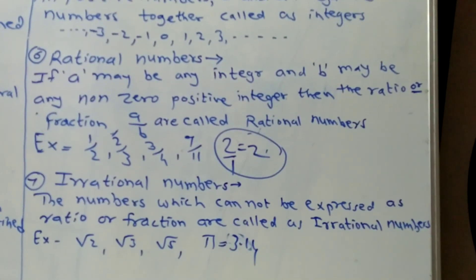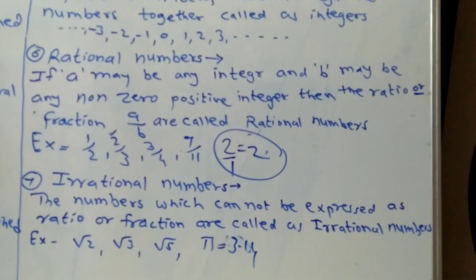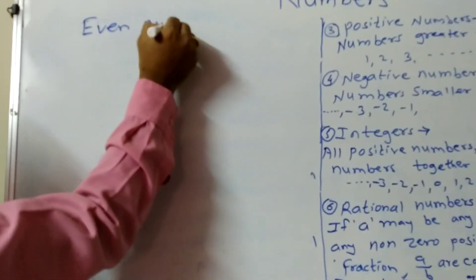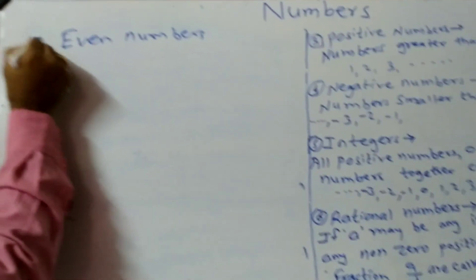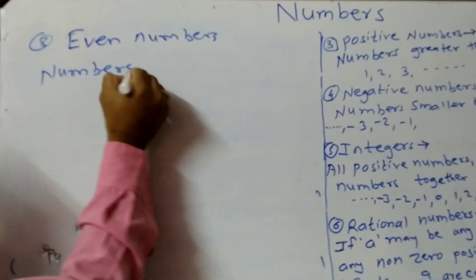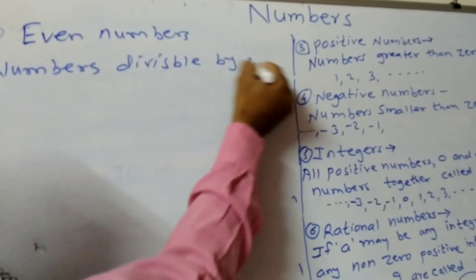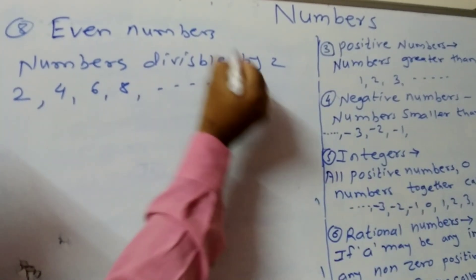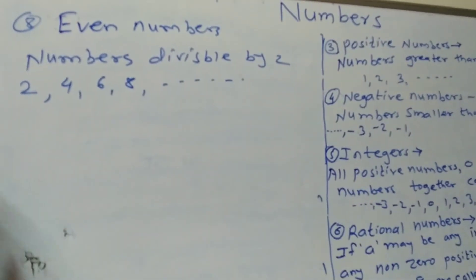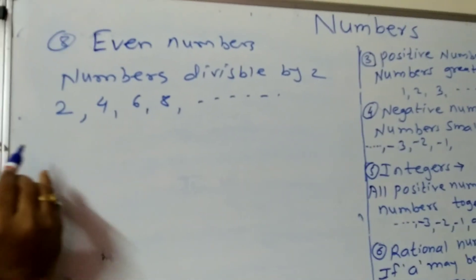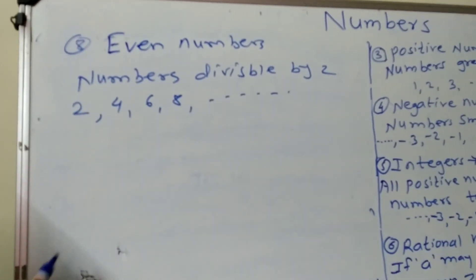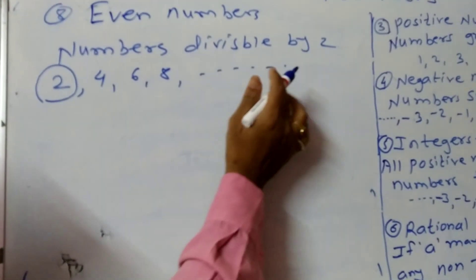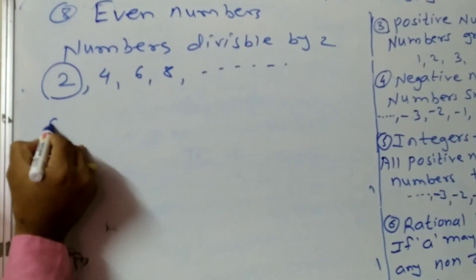The eighth type is even numbers. Numbers divisible by 2 are called even numbers. For example: 2, 4, 6, 8, and so on. All these numbers are divisible by 2. Therefore, the smallest even number is 2 and the largest even number cannot be defined.